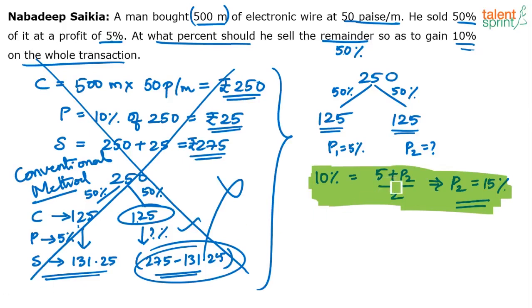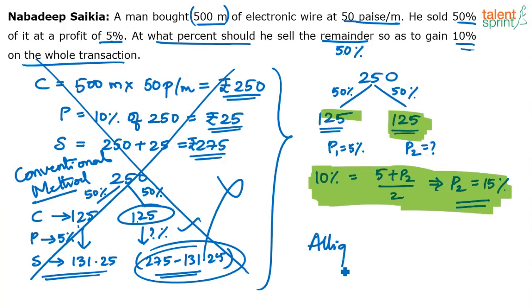Remember, this shortcut is possible because both cost prices are equal. If the cost prices are not equal, then you will have to follow the conventional method — though even the conventional method can be avoided by using the allegation method. We have discussed the allegation method in our other videos on profit and loss. When a quantity is being sold in two equal parts, the profit will be the average of the two profits. As simple as that.